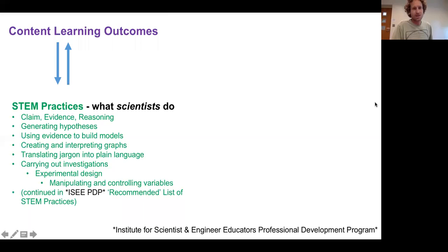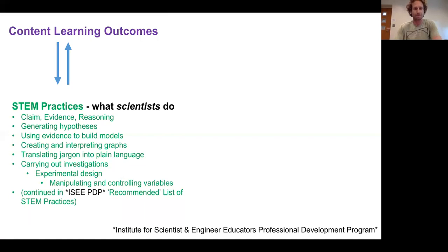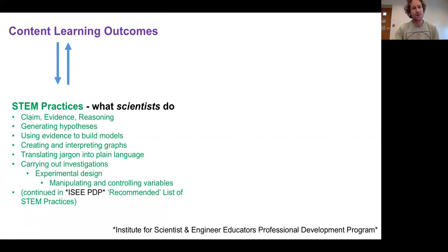After coming up with content learning outcomes, we looked at how we could take STEM practices and work the content learning outcomes into a practice — or vice versa. Some of these STEM practices include: using claim, evidence, and reasoning; generating a hypothesis; using evidence to build models; creating and interpreting graphs; translating jargon into plain language; carrying out investigations; experimental design; and manipulating and controlling variables. This isn't an exhaustive list, just to give you an idea.